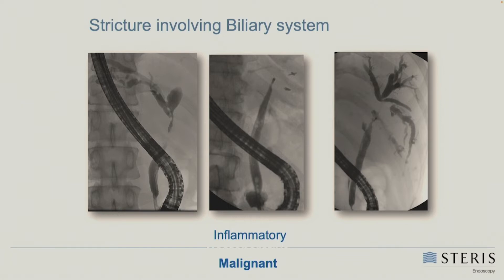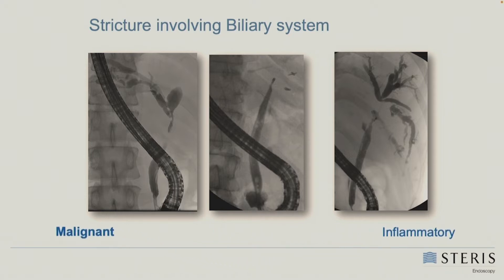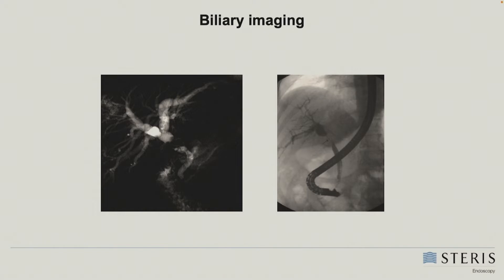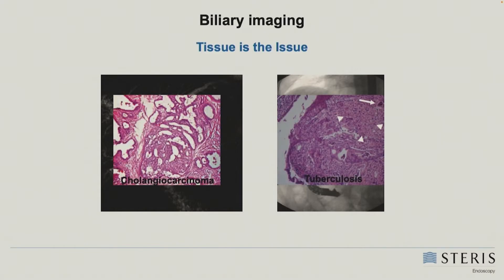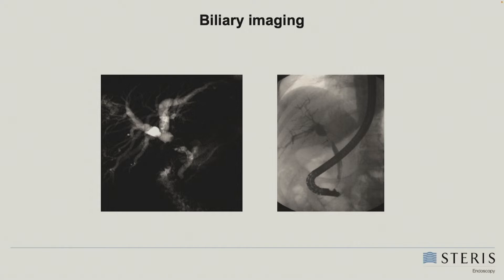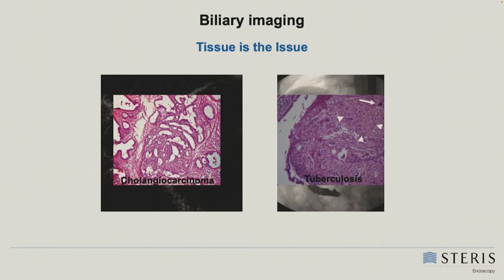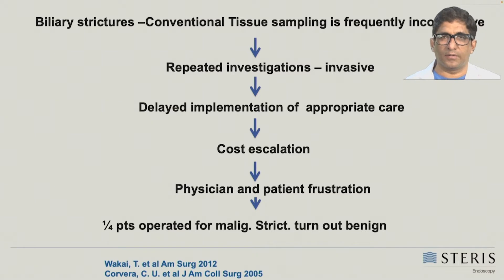As we all know, the ERCP fluoroscopy images are not diagnostic — they may suggest the etiology, but we depend on tissue for the exact etiology, as fluoroscopy images may look similar. In this example, the left side image is suggestive of a stricture but the etiology is cholangiocarcinoma, and on the right side the similar-looking stricture turned out to be tuberculosis. Both diseases have different treatments, so it is important for us to get proper tissue.